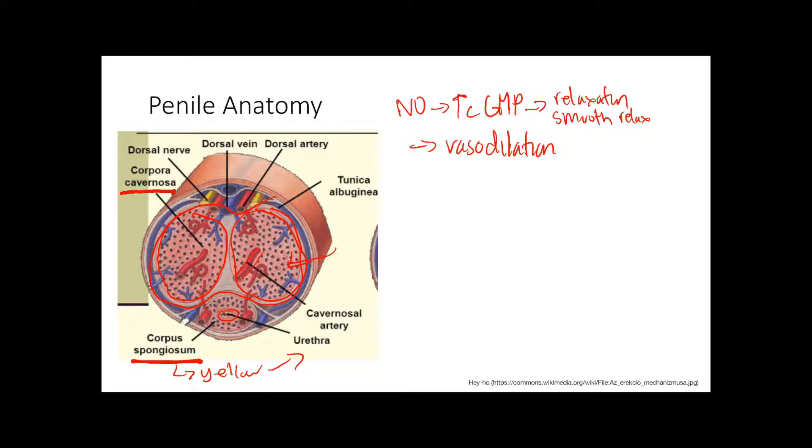Looking at the opposite effect, how do you get rid of an erection? Norepinephrine causes smooth muscle contraction, which leads to vasoconstriction, decreasing blood flow to the penis. That's how you kill an erection.